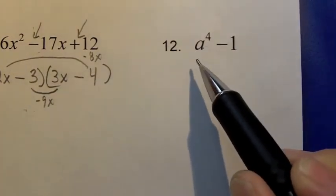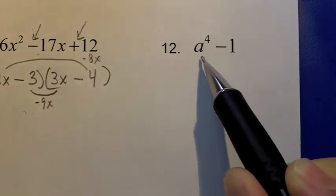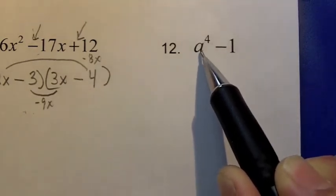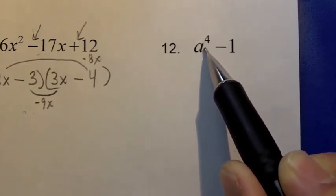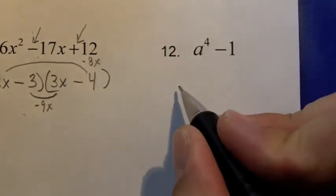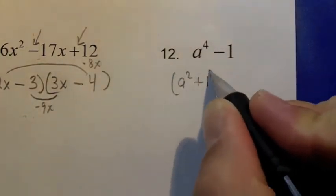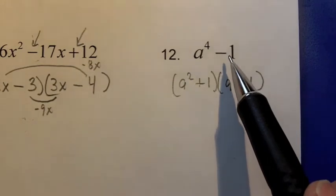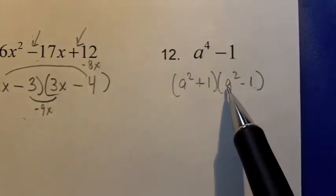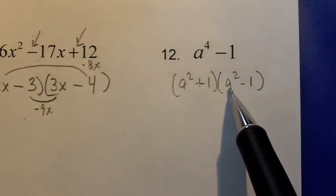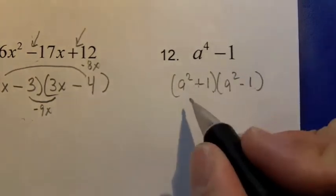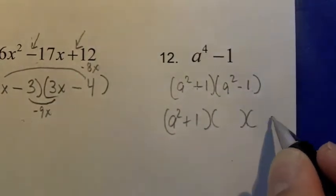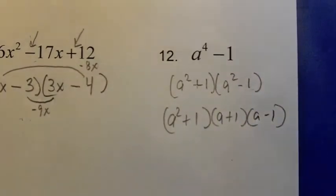Next, problem 12. No greatest common factor, and I have two terms, so I check for a difference of squares. It is a difference: a⁴ minus 1. a² times a² gives a⁴, and 1 times 1 gives 1, so this factors as (a² + 1)(a² − 1). But we need to factor completely — (a² − 1) is itself a difference of squares: a times a gives a², and 1 times 1 gives 1. Factoring again gives (a + 1)(a − 1). The final completely factored form is (a² + 1)(a + 1)(a − 1).